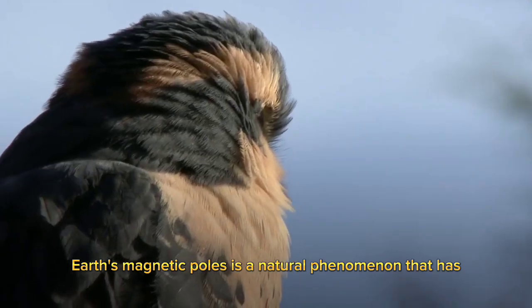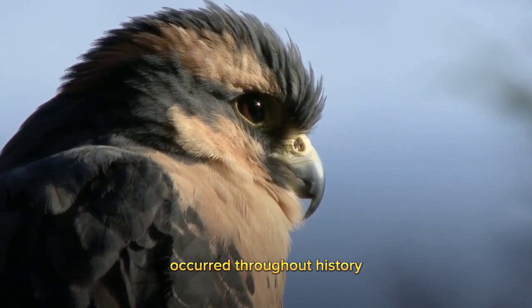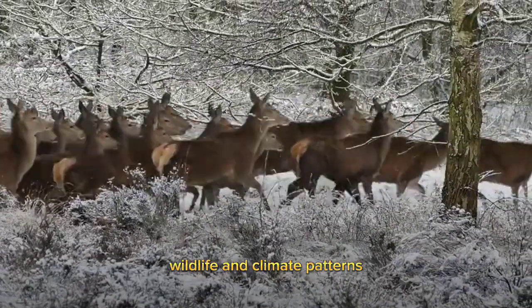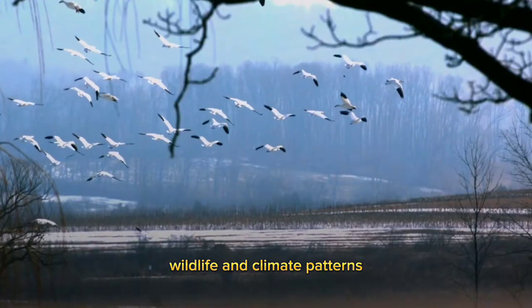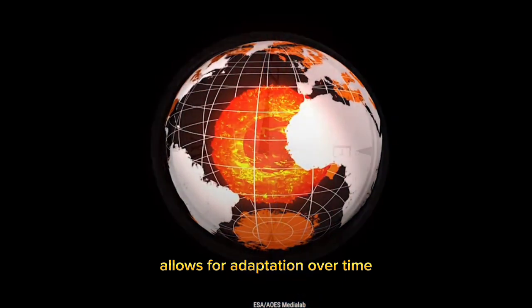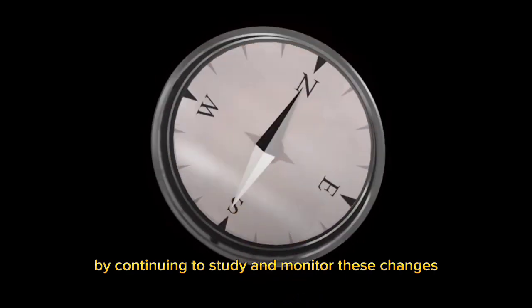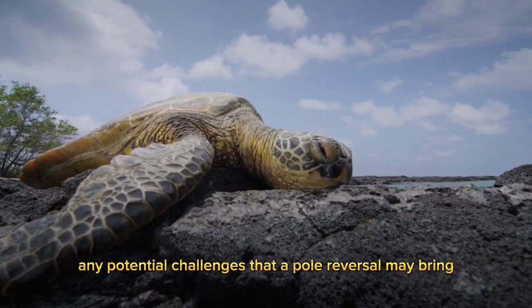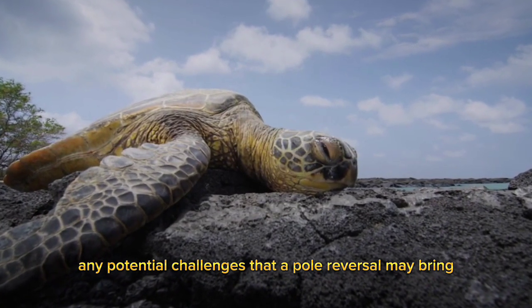In conclusion, the reversal of Earth's magnetic poles is a natural phenomenon that has occurred throughout history. While it could have significant effects on our technology, wildlife, and climate patterns, it is a gradual process that allows for adaptation over time. By continuing to study and monitor these changes, scientists can better prepare for any potential challenges that a pole reversal may bring.